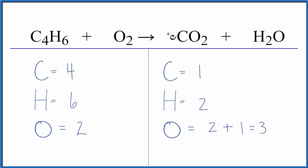Let's start by putting a four in front of the CO2. I like to leave the oxygens till last, so if we put a four in front of the CO2, one times four, that'll give us four carbons, and those will be balanced.